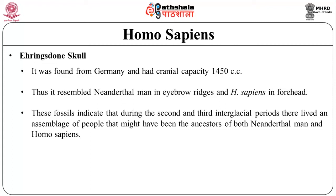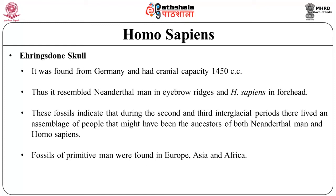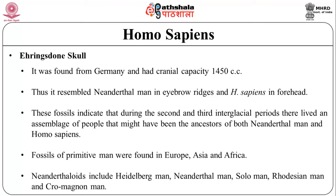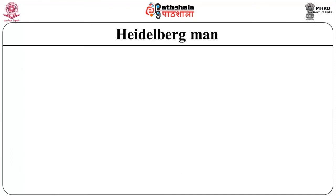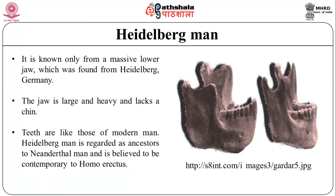All these forms have been included in Homo sapiens, and it is wise to call them 'early Homo sapiens.' Following distinct types of Homo appeared in due course; all have become extinct except Homo sapiens sapiens, which appeared quite late in the evolutionary period. Fossils of primitive man were found in Europe, Asia and Africa — all differing slightly but exhibiting enough similarities to be grouped together as Neanderthals. The Neanderthals include Heidelberg Man, Neanderthal Man, Solo Man, Rhodesian Man and Cro-Magnon Man. Heidelberg Man is known only from a massive lower jaw found from Heidelberg, Germany — large, heavy and lacking a chin — with teeth like modern man, regarded as ancestor to Neanderthal Man and contemporary to Homo erectus.